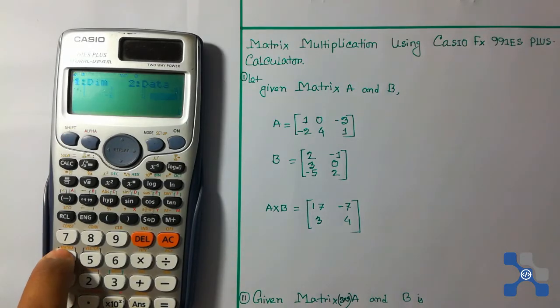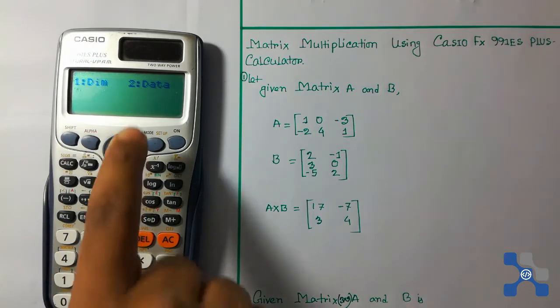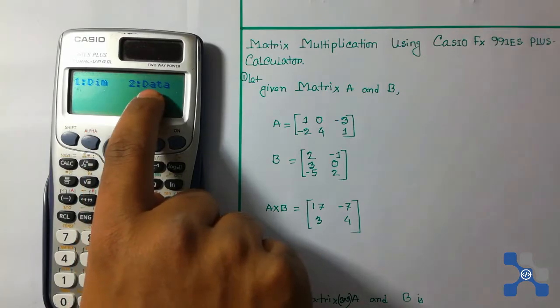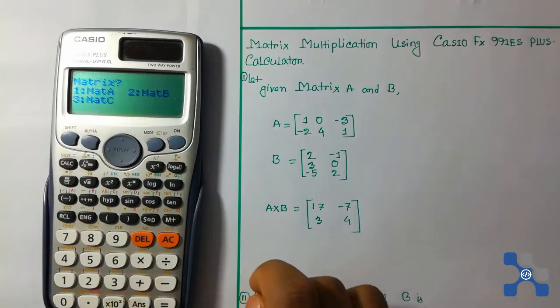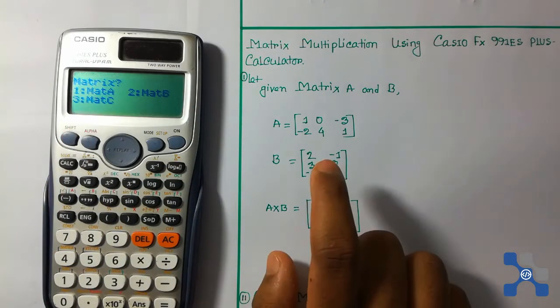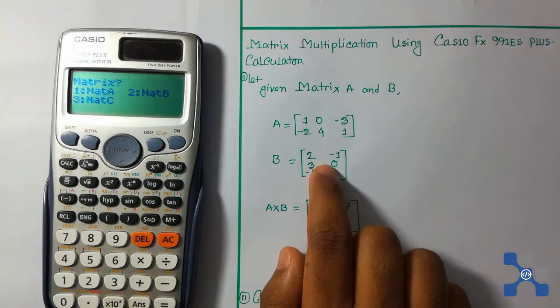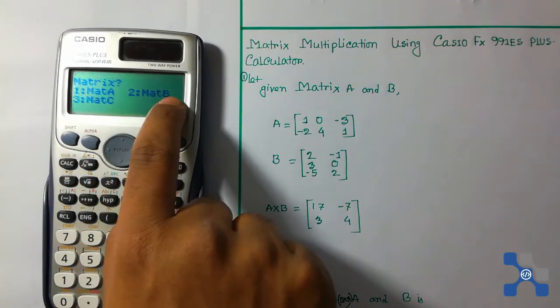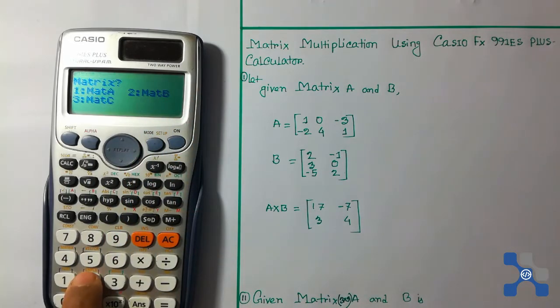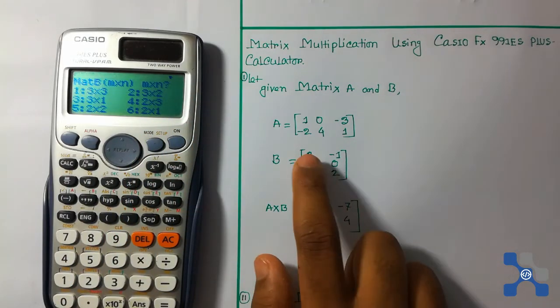We previously loaded matrix A on mat A. Now we will load matrix B on mat B. That is 2 for mat B, so press 2.